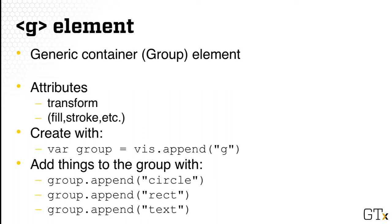You can use the g or the group element to do it. G is a generic container element, so that means you can put a lot of different things into it. You can think of it as just a way of grouping things. After grouping elements, you can apply transformation, like moving the whole group of elements all together. You can also change the color, change the stroke, and so on all at once. Very similar to other text you've seen, the way you create a group is you use append and then append g. Once the group is created to add things to the group, you can say group.append, like add a circle or append a rectangle, append text.